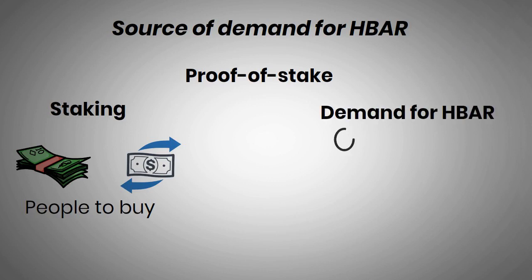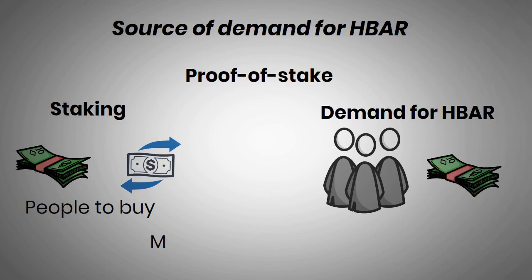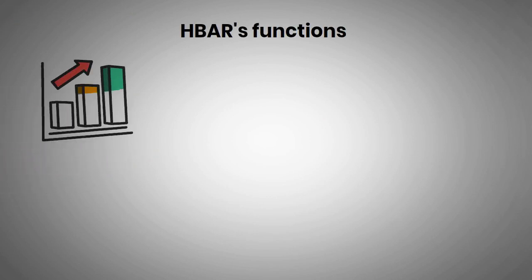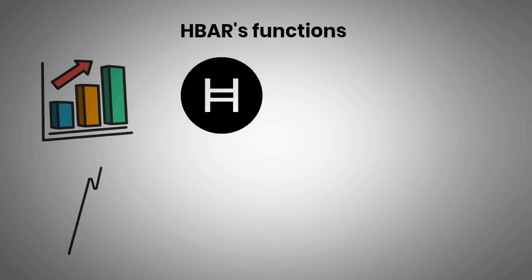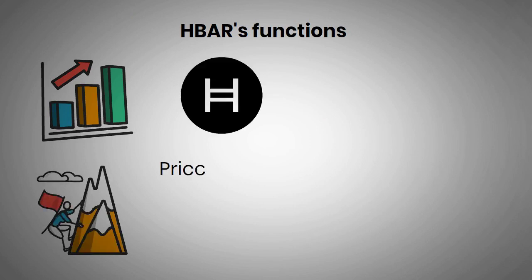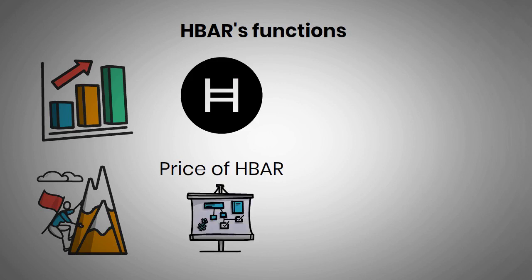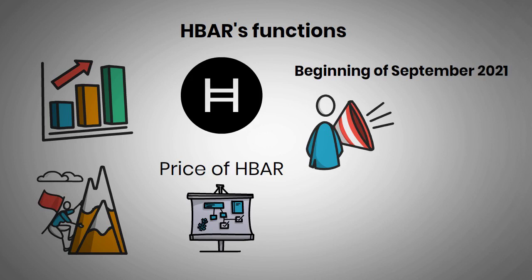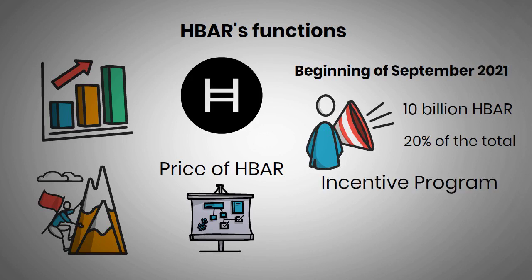There will also be demand for HBAR from developers who require it to pay for network services, such as making transactions, managing fungible and non-fungible tokens, and logging data. HBAR's functions will see increased demand as the ecosystem expands and Hedera Hashgraph achieves greater adoption and transaction volume. The price of HBAR could rise as the project develops and Hedera Hashgraph forms more partnerships and integrations. At the beginning of September 2021, the Hedera Hashgraph ecosystem announced an incentive package of 10 billion HBAR — 20% of the total token supply — to develop the Hedera ecosystem.